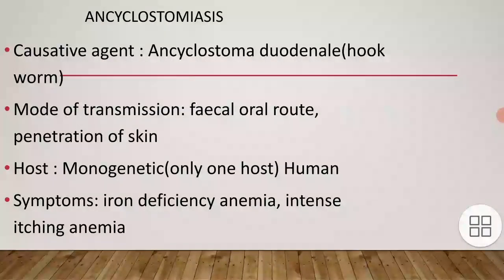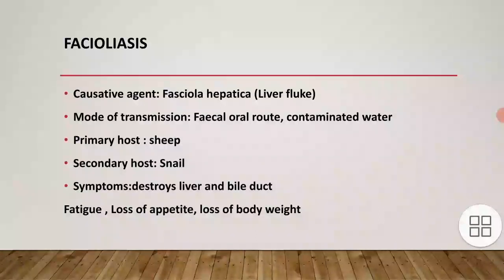The first one is ancylostomiasis, a disease caused by Ancylostoma duodenale, commonly called hookworm. Mode of transmission: fecal-oral route or penetration of skin by larva. Host: Ancylostoma are monogenetic — human host only, with both adult and larva found in humans. Symptoms: iron deficiency anemia and intense itching.